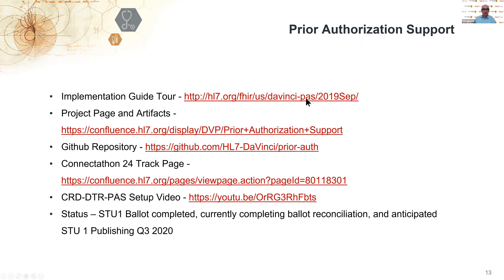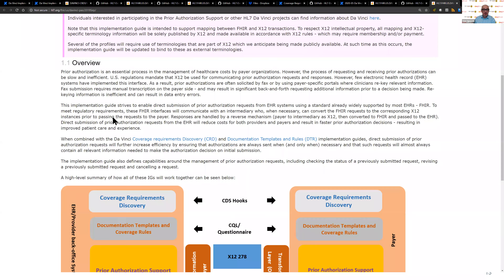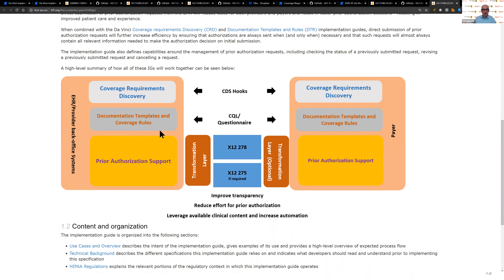In prior authorization support, we take that questionnaire response bundle — which includes the information collected in the SMART on FHIR application — and add a claim resource containing the mapping and information necessary to create an X12-278 message. We don't do that transformation in our guide; we provide some example mappings sponsored by X12 and licensed for limited use by the HL7 community for testing purposes, but they'll ultimately be developing and maintaining additional mappings. Historically, the financial domain in healthcare has been the focus of X12, and now that we appreciate the value of FHIR and want to combine the clinical and financial domains, we're creating profiles on financial FHIR resources.